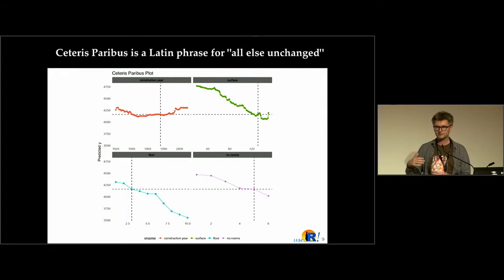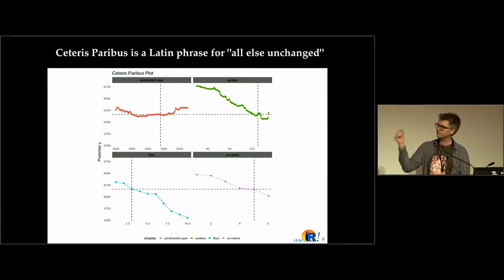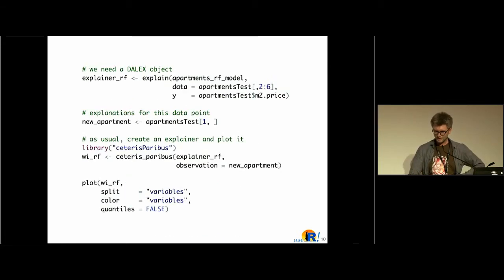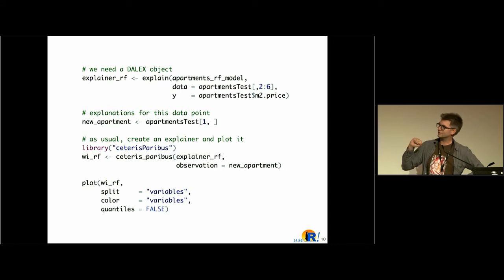You can imagine a situation where a patient has a very low score, and you say: to increase your score, you need to move this variable by this much, because then the model will say it's enough to change the score. There's a short example of how to do this.